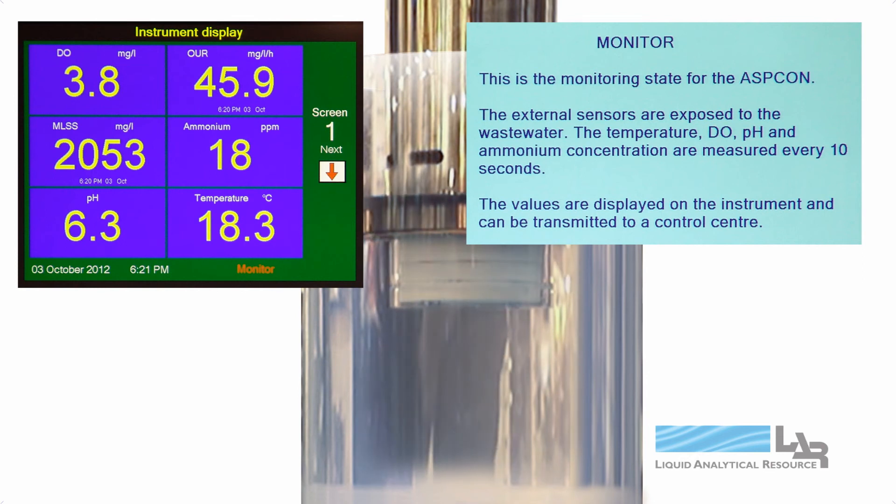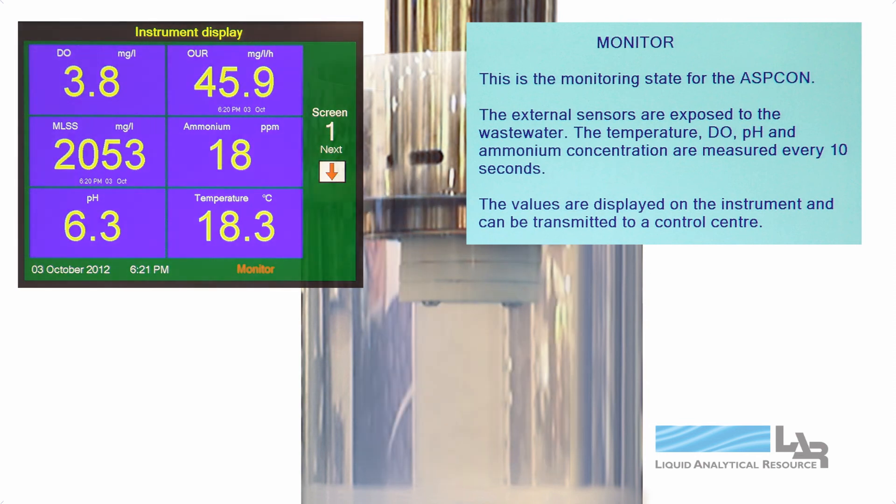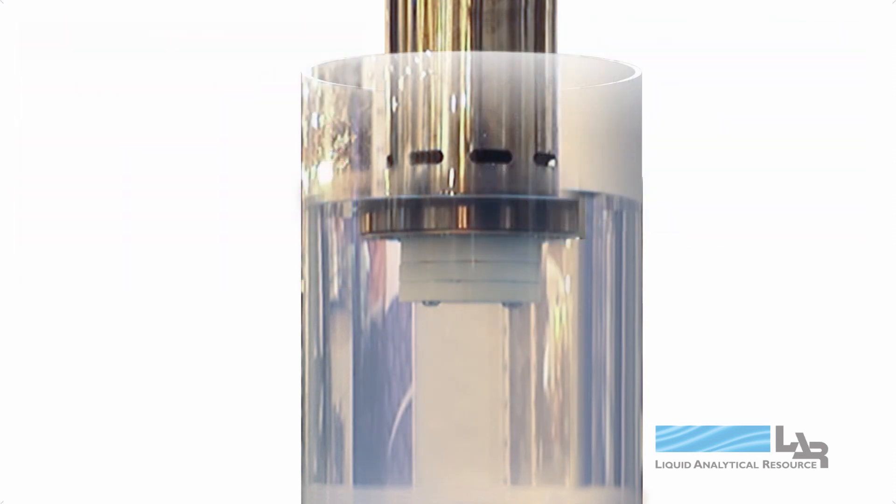During the monitoring cycle, the external sensors are exposed to the wastewater. The temperature, DO, pH, and ammonium concentrations are measured every 10 seconds. The values are displayed on the instrument and can be transferred to a control center.